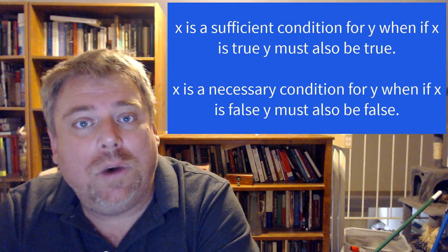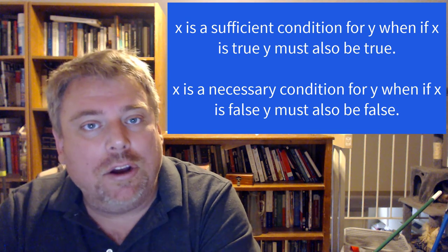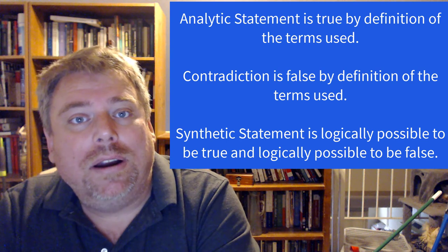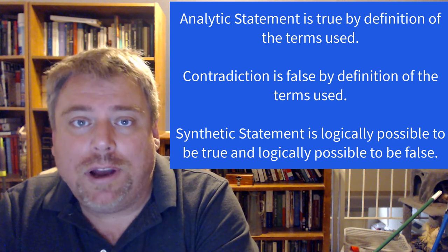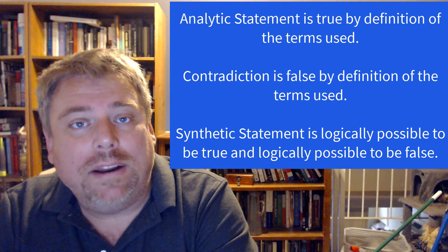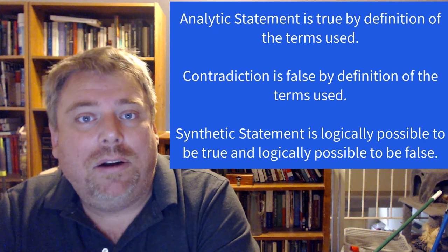Understand what X and Y are and then just run it through. Sufficient condition: X is sufficient for Y when if X is true, Y is true. Necessary condition: X is necessary for Y when if X is false, Y is false. An analytic statement is true by definitions of the terms used. A synthetic statement is logically possible to be true and logically possible to be false. A contradiction is where the terms require the statement to be false because it contradicts itself. If you have any questions, please feel free to email me. You guys have a good day, bye-bye.